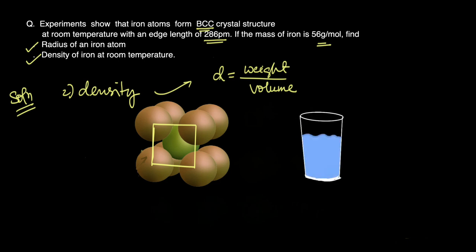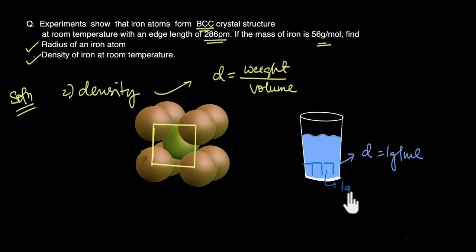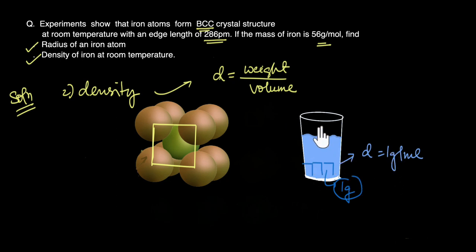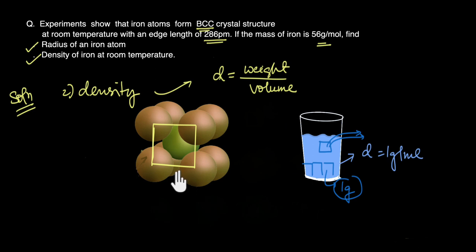For example, a glass of water has a density of one gram per ml, so per unit ml of water I'll always have one gram. This is because the molecular distribution of water is exactly the same throughout the sample. Similarly, because the overall iron sample is made up of the same unit cells over and over again, the density of the overall system equals the density of a single unit cell.